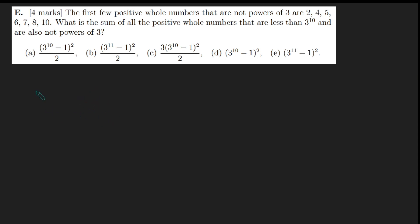So what are they asking us to calculate? Well, basically, we can think of this as adding up all the numbers up to 3 to the 10 or 3 to the 10 minus 1. And then we're going to subtract off all the powers of 3. Notice here that they're including 1 as a power of 3 because they've excluded it from this list in their example.